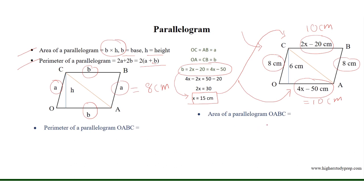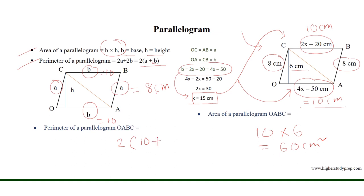The area of parallelogram OABC equals base multiplied by height, which is 10 cm multiplied by 6 cm, giving 60 cm squared. The perimeter of this parallelogram is equal to 2 multiplied by the sum of 10 cm, the length of one pair of parallel sides, plus 8 cm, the length of the other pair. So 2 times 10 plus 8 equals 36 cm, which is the perimeter of this parallelogram.